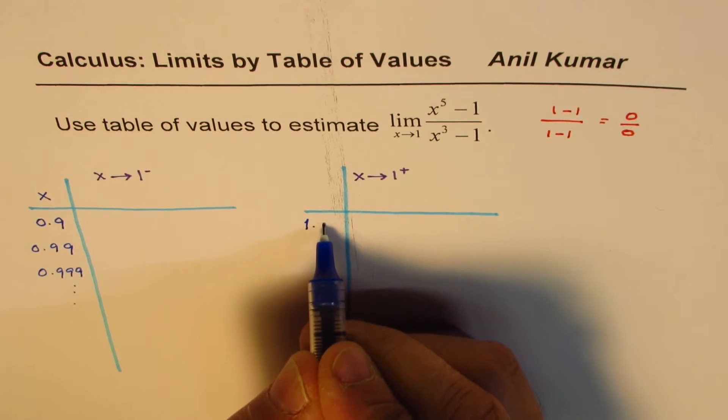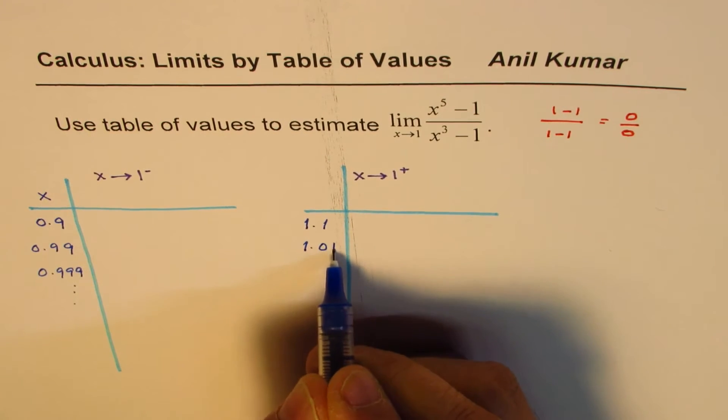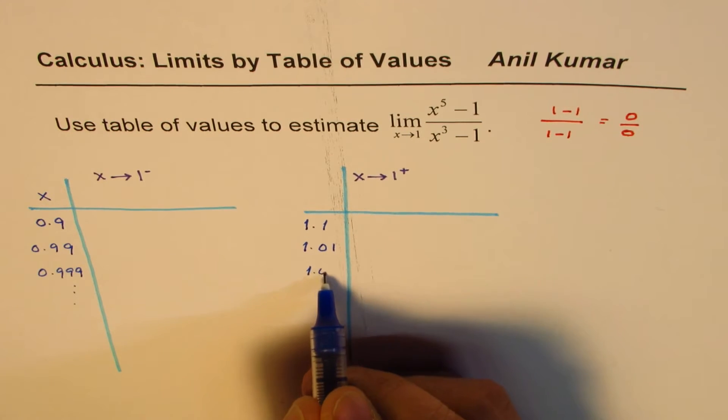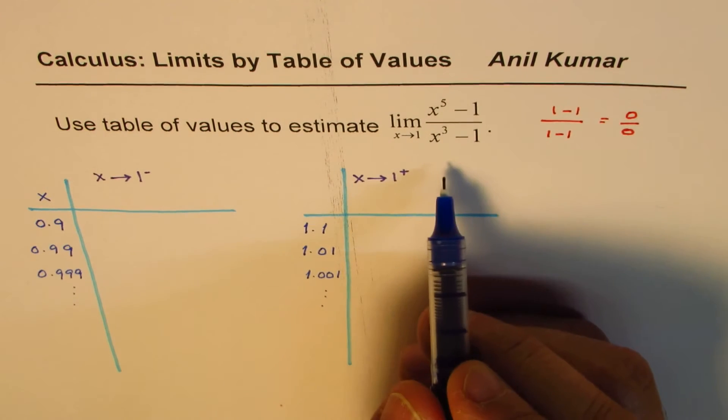Approaching from the right side means it is slightly more than 1. So 1.1 is more than 1. If you want to come closer, 1.01, or it could be 1.001, or so on. So you can continue in this fashion.